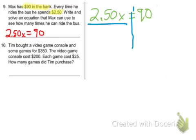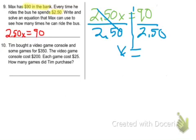So we need to divide by 2.50 on both sides. These cancel. And X equals 36. So he can ride the bus 36 times.